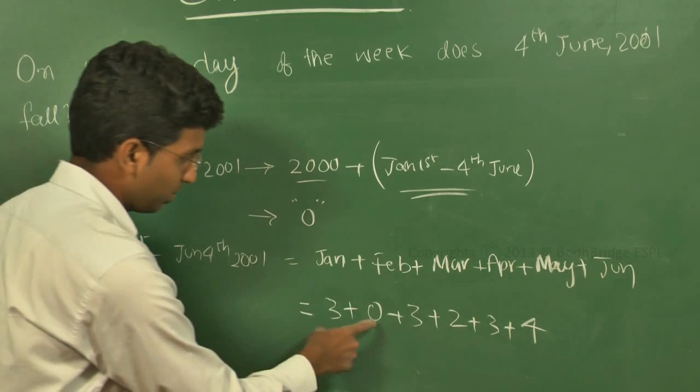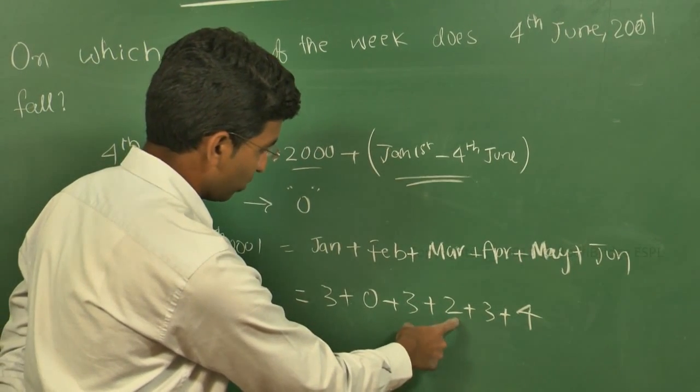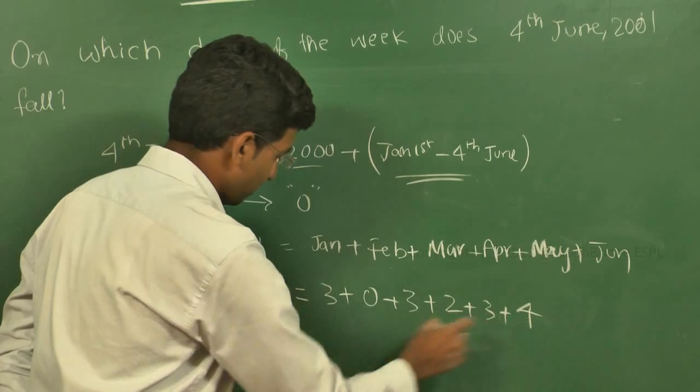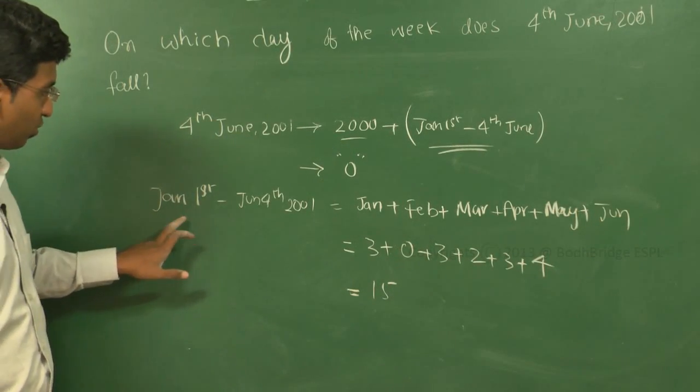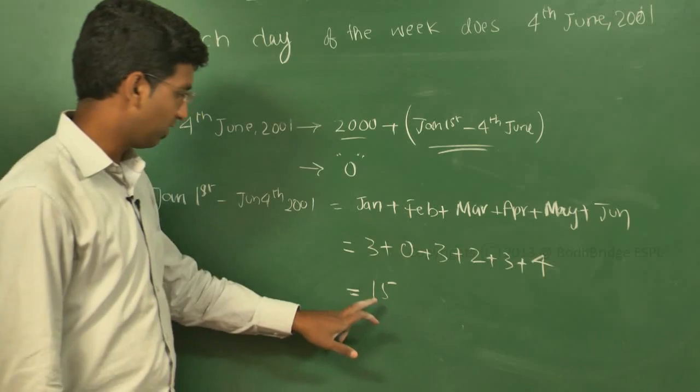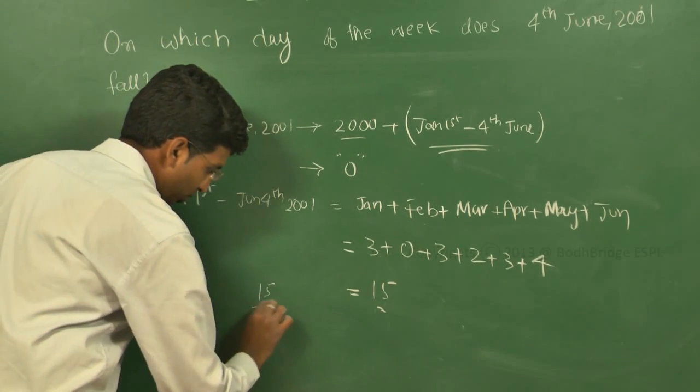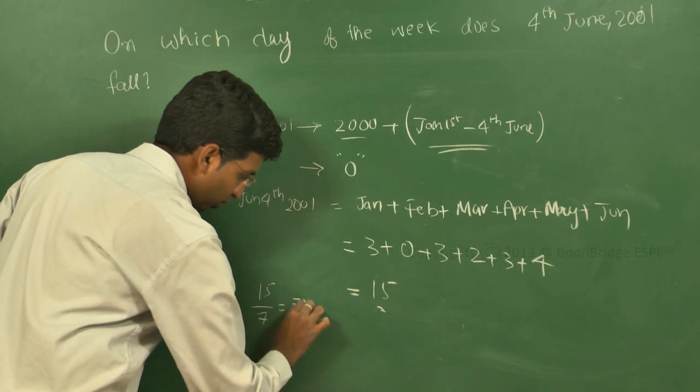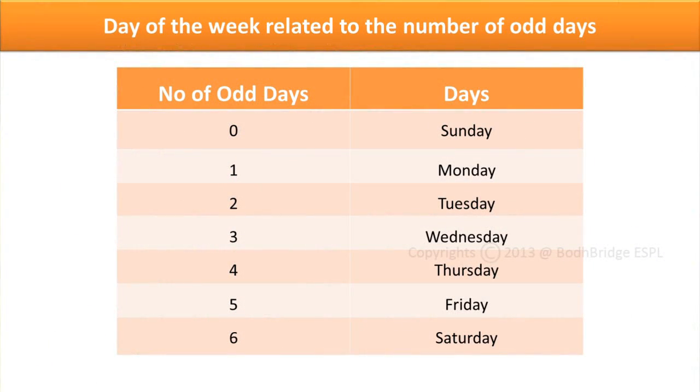On adding all this: three plus zero plus three equals six, plus two equals eight, plus three equals eleven, plus four equals fifteen. So the number of odd days from January 1st to June 4th, 2001 is 15. Dividing by seven gives seven times two equals 14, with one odd day remaining.